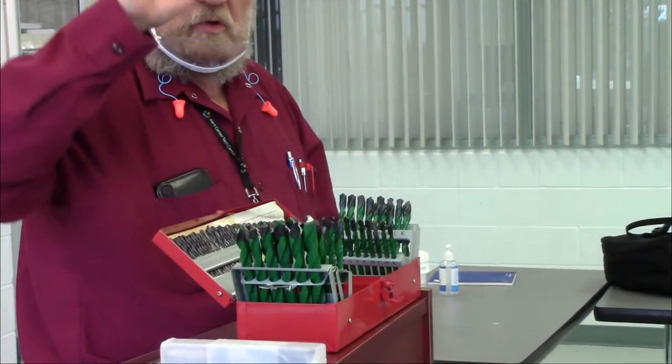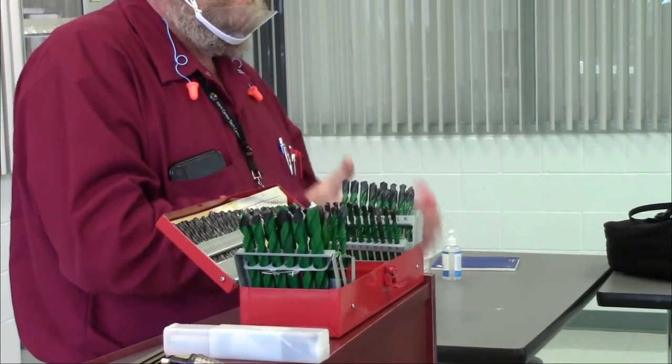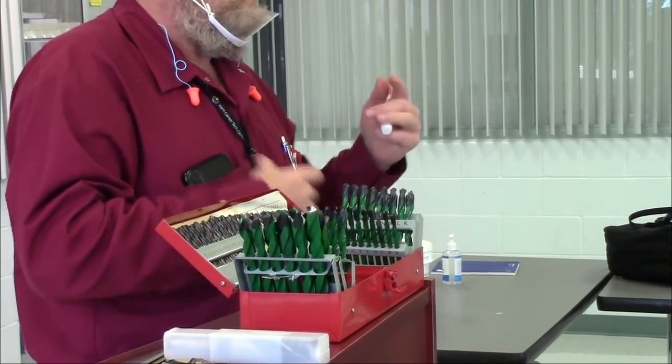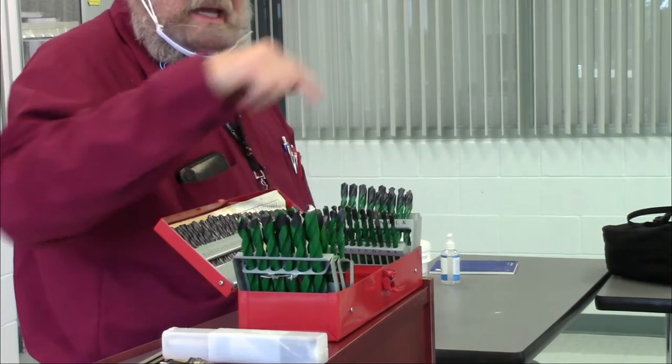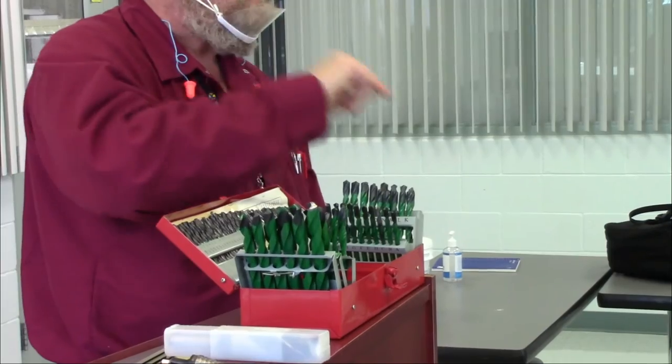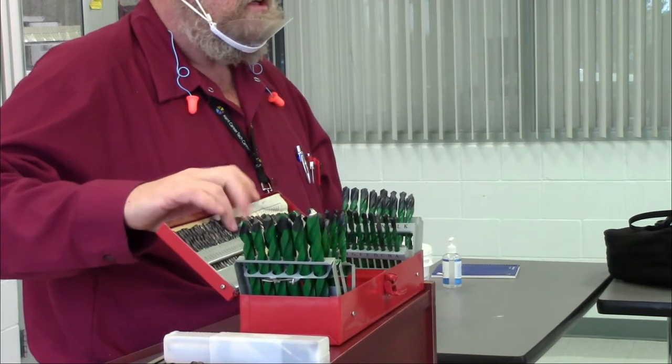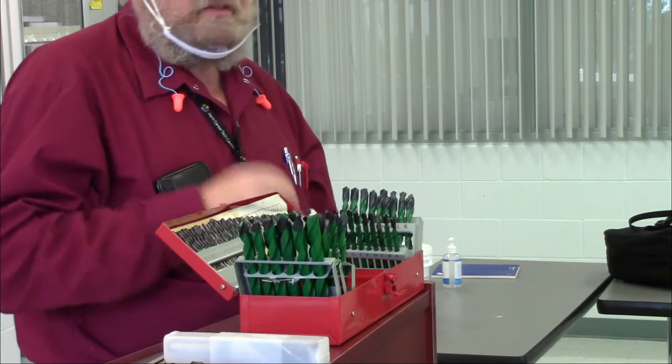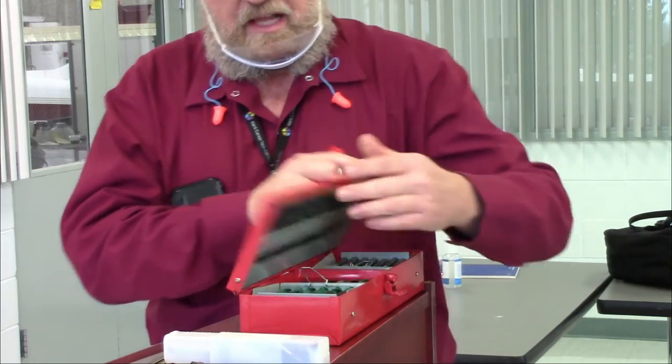Now normally in aviation you'll only use the numbered sets. Like I have a numbered set and it goes from 60 to number one. A lot of times when I'm drilling holes in steel or in castings I will go every other drill bit so that I'm not damaging a drill bit or I get a smoother hole every time. That's kind of why we have the numbered sets, they're more precise for what we're doing in aviation.